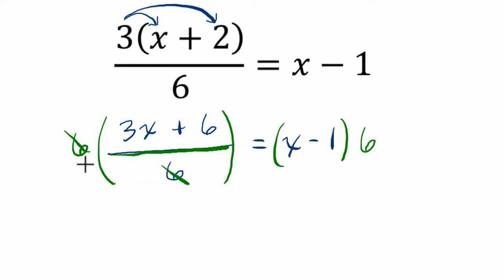So, when we multiply it by six, the division of six cancels out. So, we have three x plus six equals six x minus six. Here, I just distributed the six times the x, minus the six times the one.